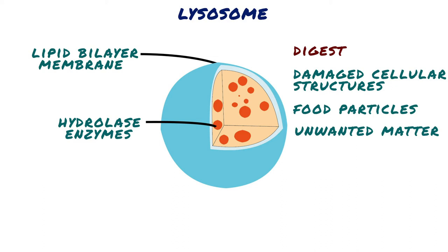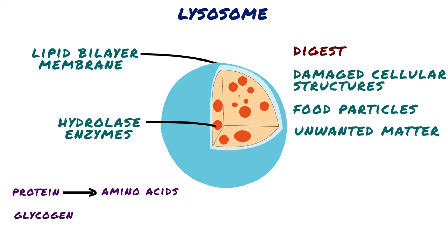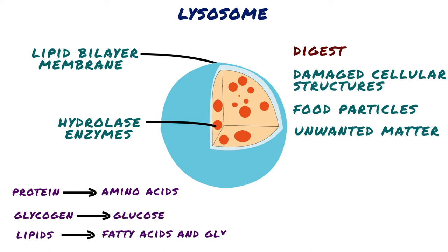A hydrolytic enzyme is capable of splitting an organic compound into two or more parts by combining hydrogen from a water molecule with one part of a compound and combining the hydroxyl portion of the water molecule with the other part of the compound. For instance, protein is hydrolyzed to form amino acids, glycogen is hydrolyzed to form glucose, and lipids are hydrolyzed to form fatty acids and glycerol.